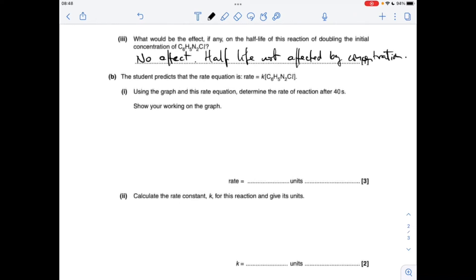Part B: we've got to calculate the rate of the reaction at 40 seconds and then using that rate equation we're going to determine k.